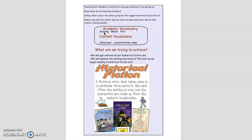We know that setting is the time and place where the story is taking place. Mood is the feeling that we get from reading the text. And plot is what is happening in the text — what's the problem, who are the characters, and what's going on? The content vocabulary for today's lesson is Holocaust and concentration camp.